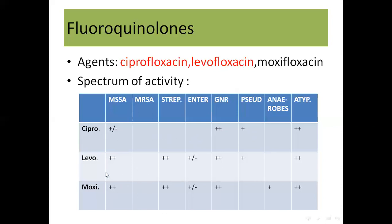Between levo and moxy, the similarity is that both are good overall for gram-positive bacteria. The differences are that levo works on pseudomonas while moxy does not, but moxy works on anaerobes while levo does not. Between cipro and moxy, cipro is poor for gram-positive while moxy is good for gram-positive; cipro is good for pseudomonas while moxy is not; cipro does not work on anaerobes while moxy does. Their common points are that both are good for gram-negative and good for atypicals.